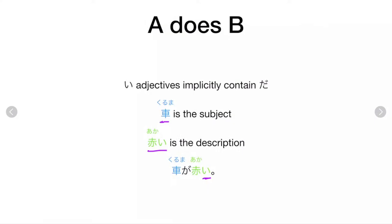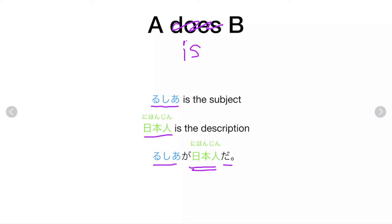Conversely, if you have a noun like nihonjin, you require da. And if you have an adjective like suki — which is not an i-adjective but a noun turned into an adjective — then rushiya ga suki da is how you'd have to say it.